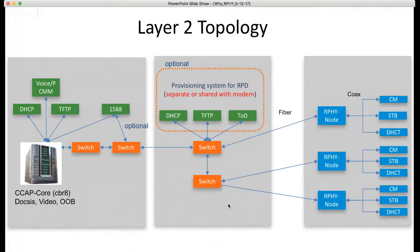Unlike the modular CMTS which required a proprietary DTI server from Symmetricom, IEEE 1588 timing is supported by most routers already in customers' headends or hub sites. You just tag onto that router and use it as a master. The layer two topology shows a C-CAP connected to switches, then to more switches, then to RFI nodes connected to cable modems and set-top boxes. Optionally, DHCP server, TFTP server, and time-of-day server can be placed between the C-CAP and the RFI nodes.